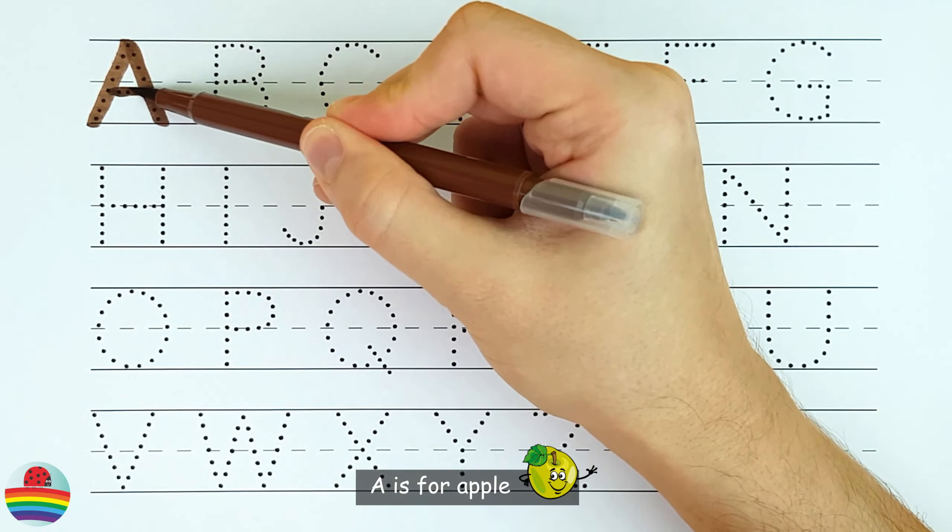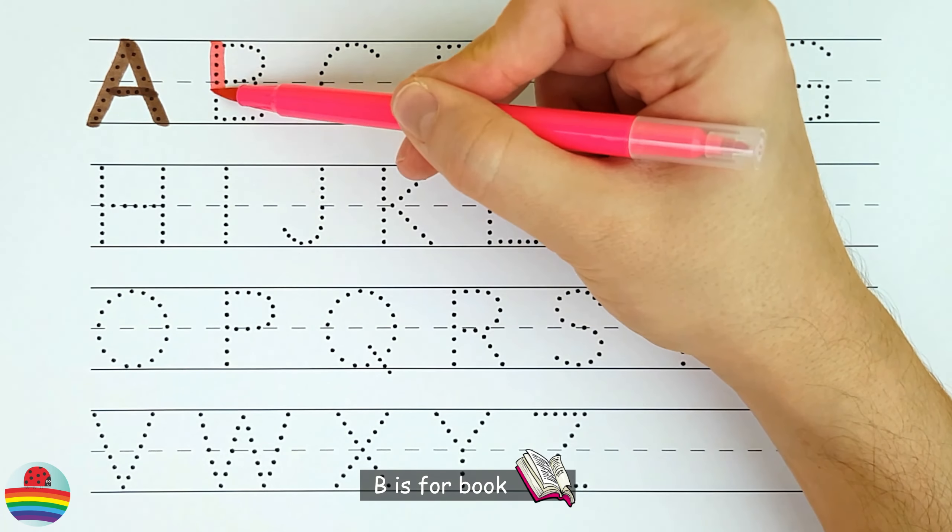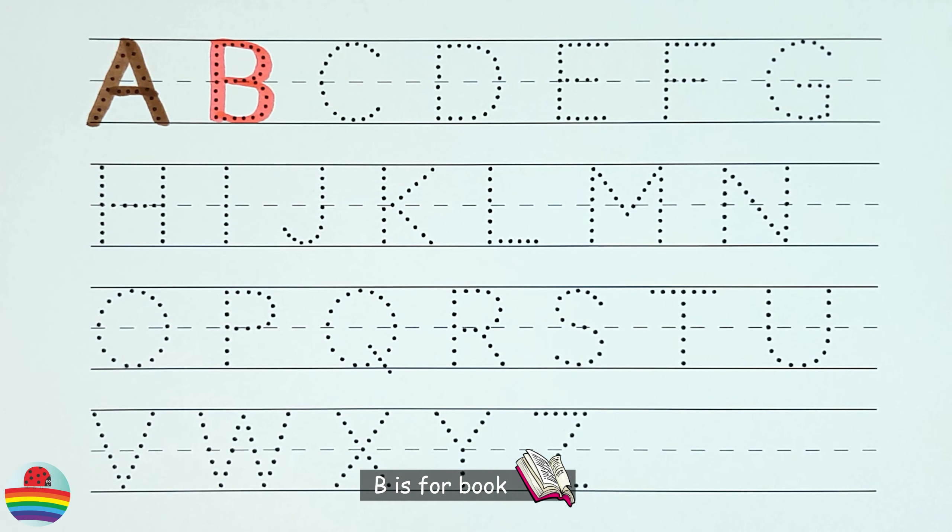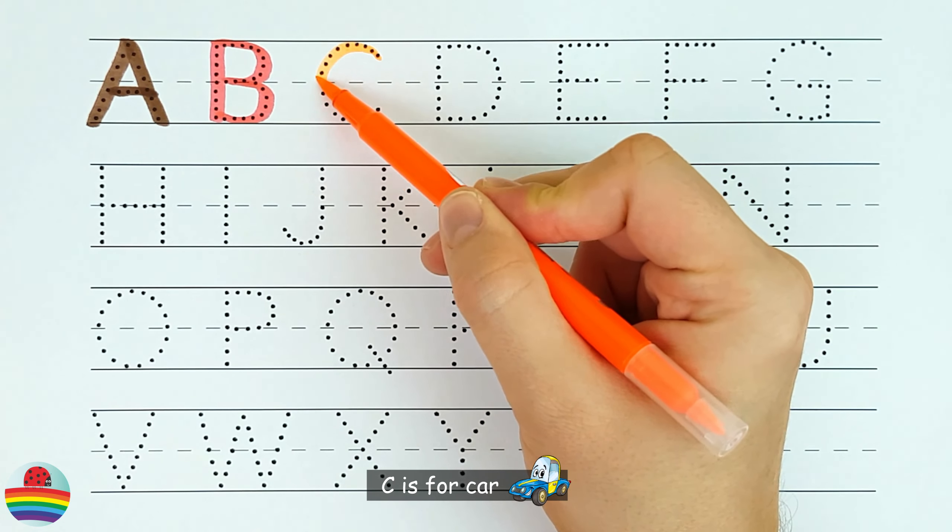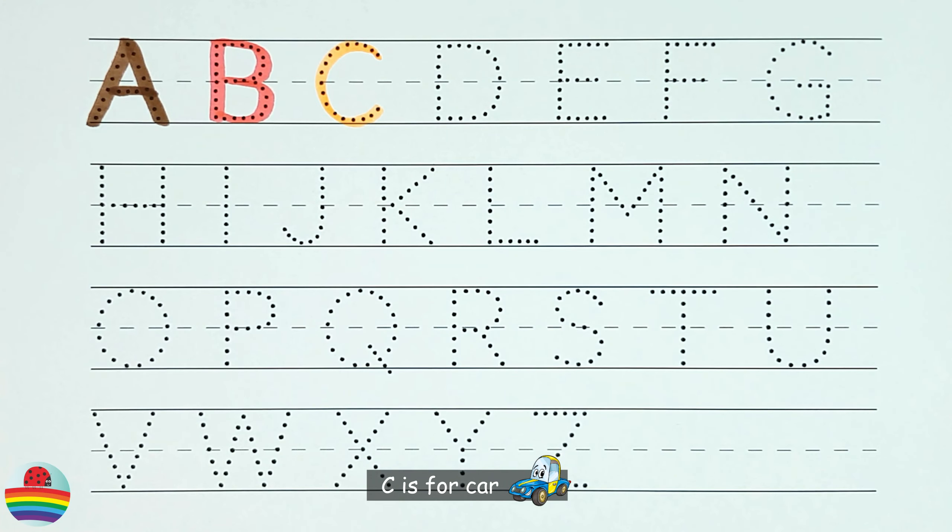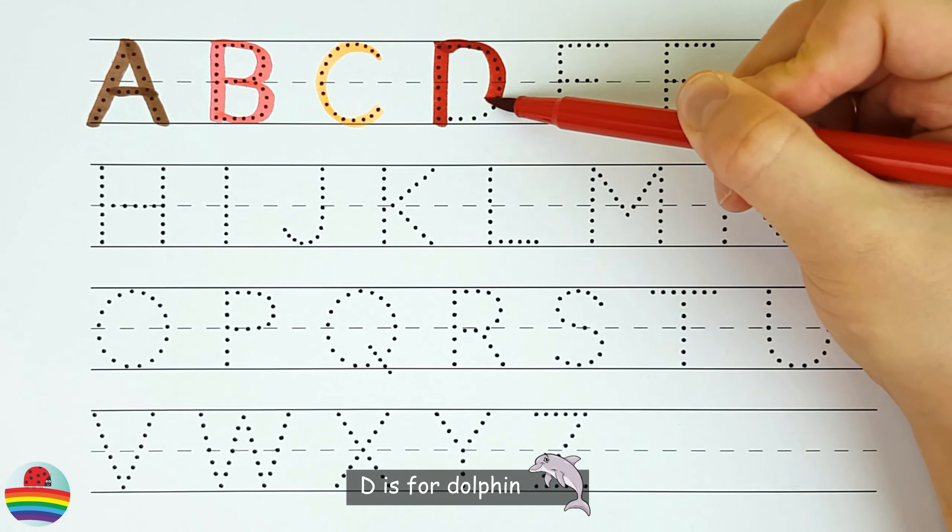A. A is for Apple. B. B is for Book. C. C is for Car. D. D is for Dolphin.